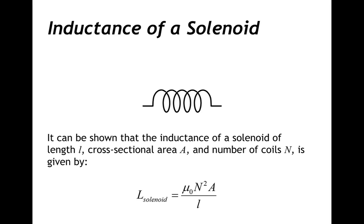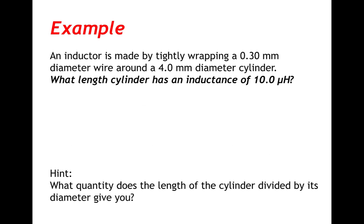Let's apply this formula for the inductance of a solenoid to an example. An inductor is made by tightly wrapping a 0.30 mm diameter wire around a 4.00 mm diameter cylinder. What length cylinder has an inductance of 10.0 µH?